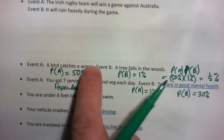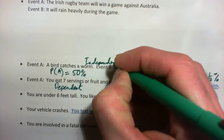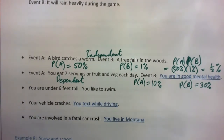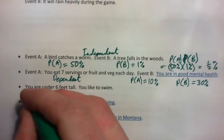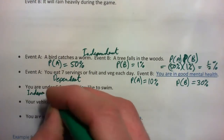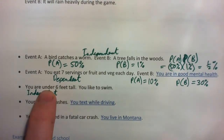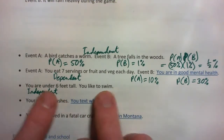So to recap: the bird catching the worm and the tree falling in the woods — those were independent; one does not affect the other. Here's another pair: being under six feet tall and liking to swim. Are those dependent or independent? These are independent — I can't see any reason why one would affect the other. How would liking to swim make you taller, or being under six feet make you like to swim? So these are independent events.